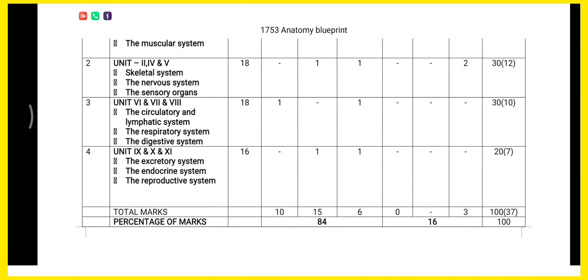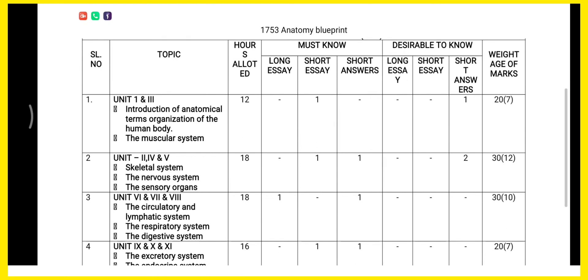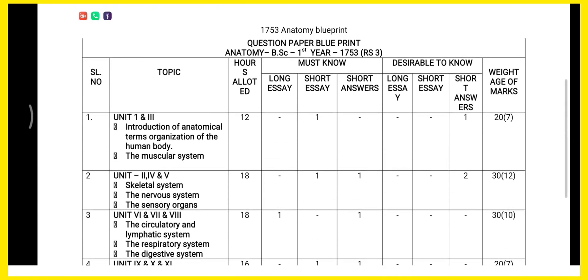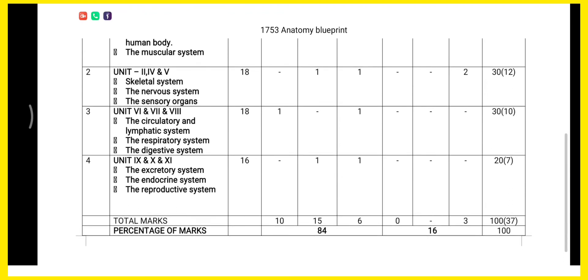The last topic is unit 11 and 12, which covers the excretory system, the endocrine system, and the reproductive system. Here we can see that for 5 marks one question may be asked, and for 2 marks one question will be asked — totaling 7 marks for this unit.